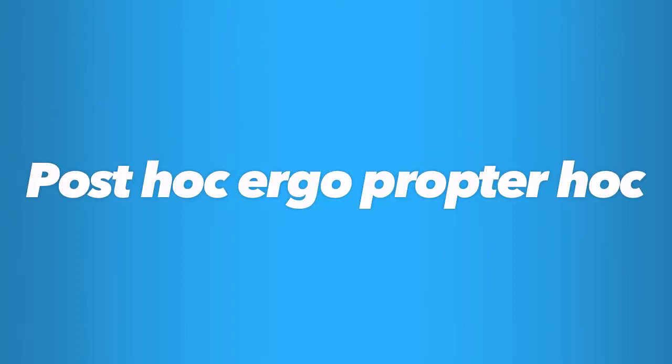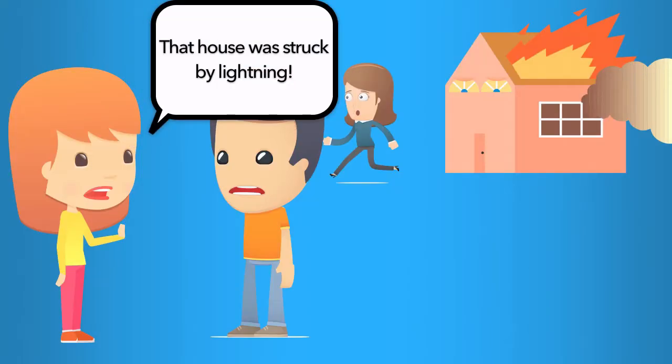Post hoc, ergo propter hoc. Imagine you're walking through your neighborhood just after a thunderstorm. You turn a corner and you see a house on fire. One of your neighbors is standing near the house and tells you, did you see that big storm that came through? That house was struck by lightning. Do you assume that the lightning strike caused the fire?